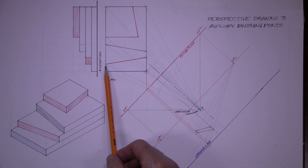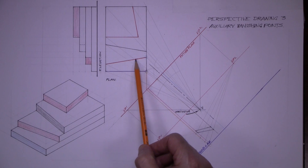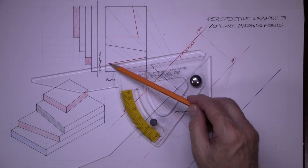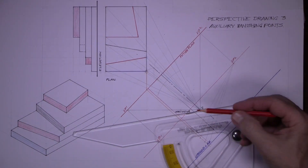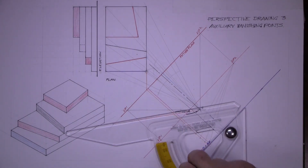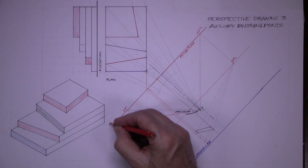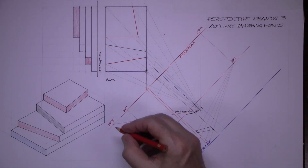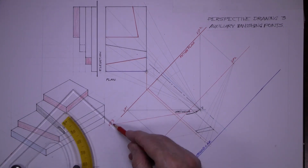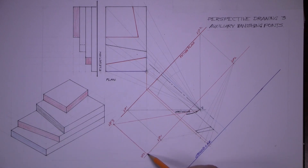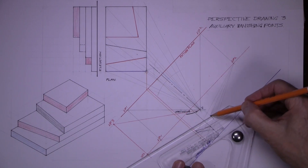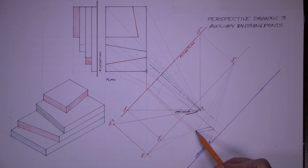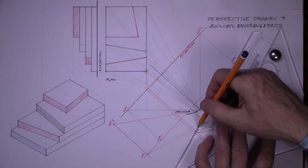Join those up and bring this point down — that gets those two points there. As these two lines are not parallel, we have to find a new vanishing point for this line. Set the adjustable set square to the angle of the line, and from the spectator draw out to the picture plane. That gets us a new vanishing point: vanishing point 3.